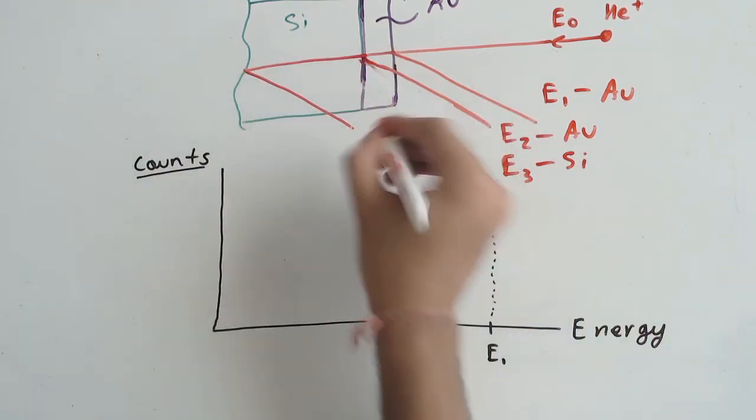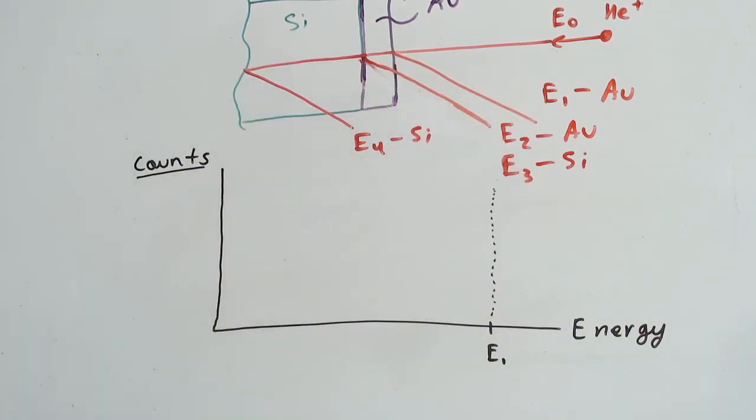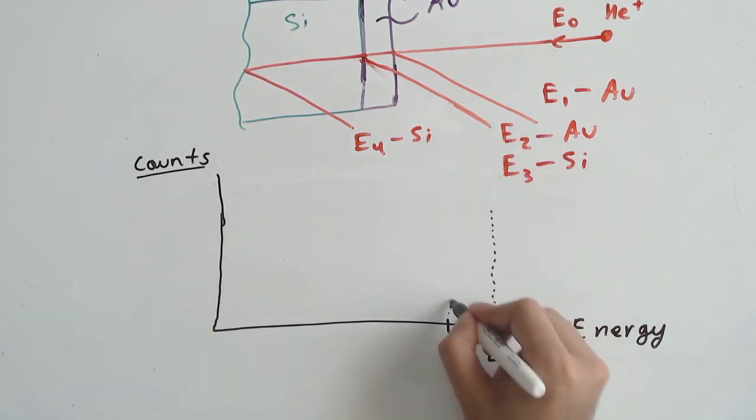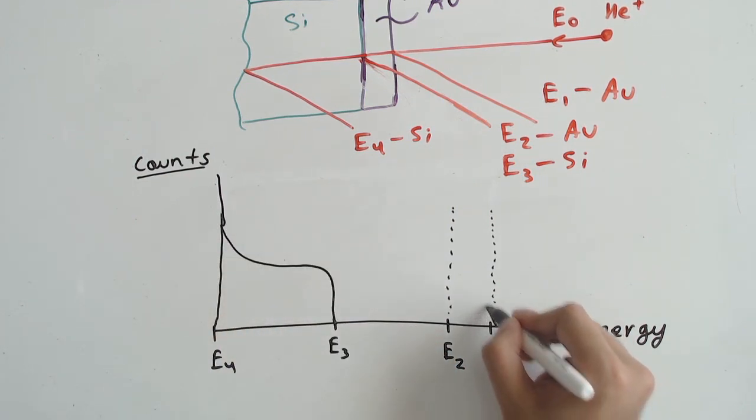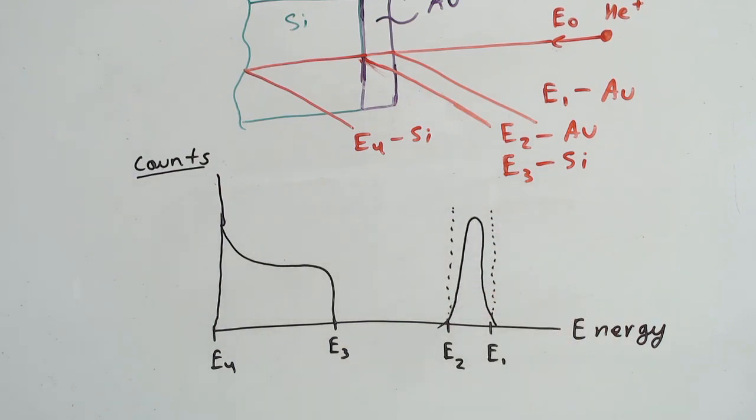Next, we know that silicon is a light element, and so we receive a lower signal both in counts and on the energy spectrum. But that spectrum extends all the way to the zero energy because the thickness of the substrate can be considered much higher than the penetration depth of the helium projectile at the modest energy that we usually operate at which is around 2 MeV.